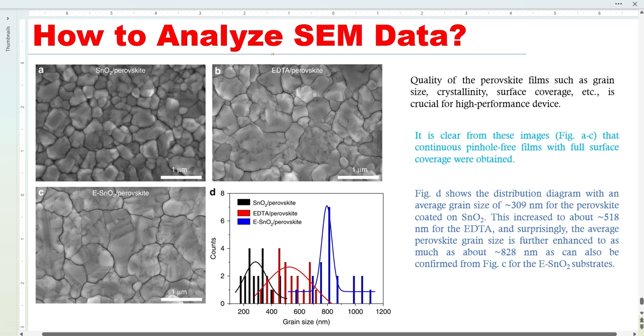How to analyze and describe scanning electron microscopy images in a research paper. SEM analysis is a very crucial technique and every top research paper must include these techniques because SEM gives us a lot of information about the surface morphology, the roughness, the grain size, and so many other information.